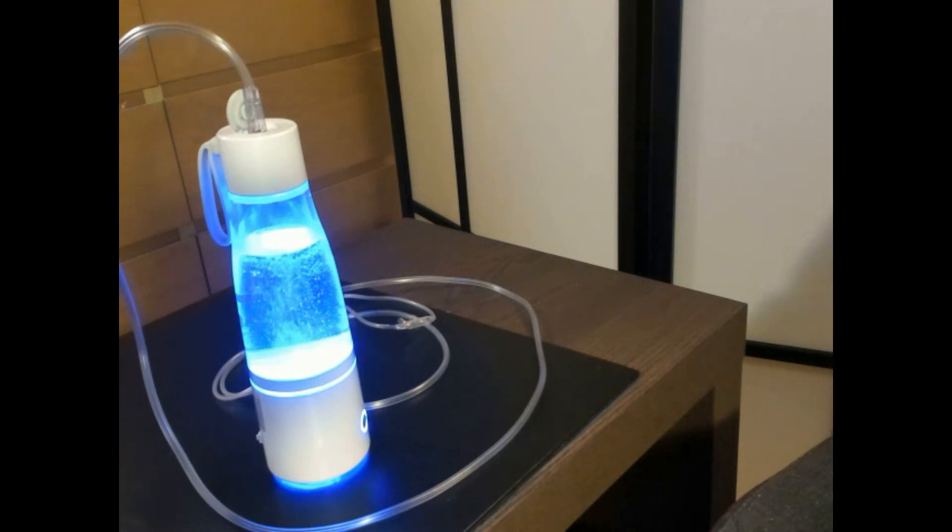When it starts blinking red, it's time to charge it again via the USB. To clean the bottle now and then, fill it with water and press the button for 3 seconds, and it will light green when ready. Discard this water and refill with new water to hydrogenate.